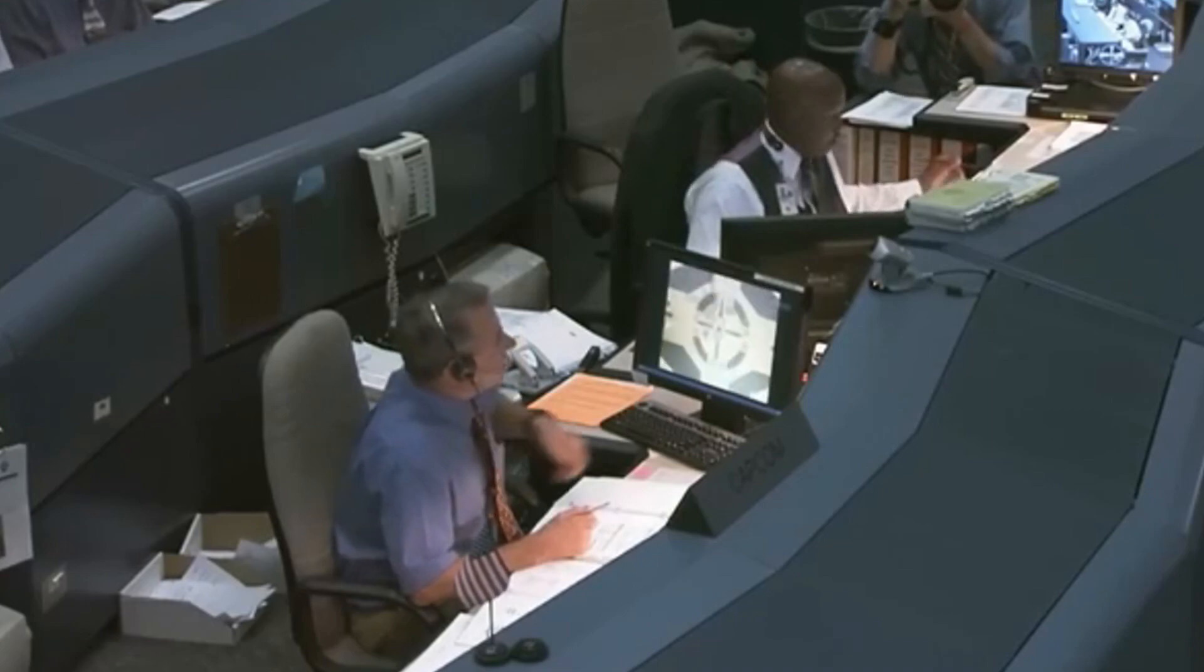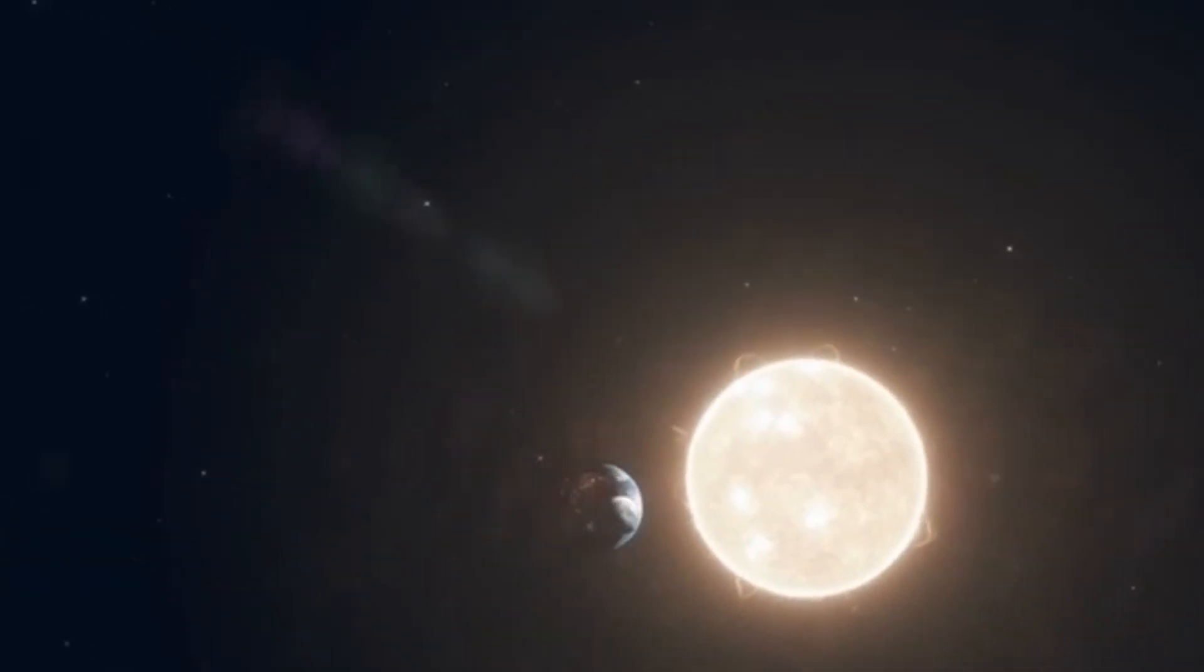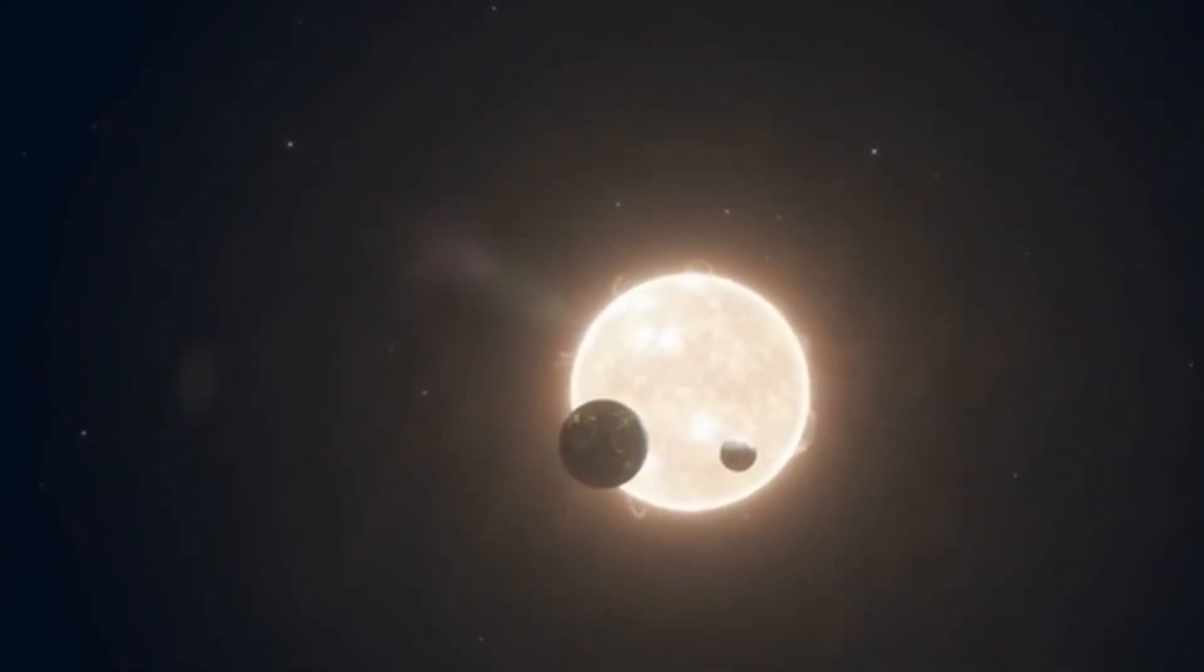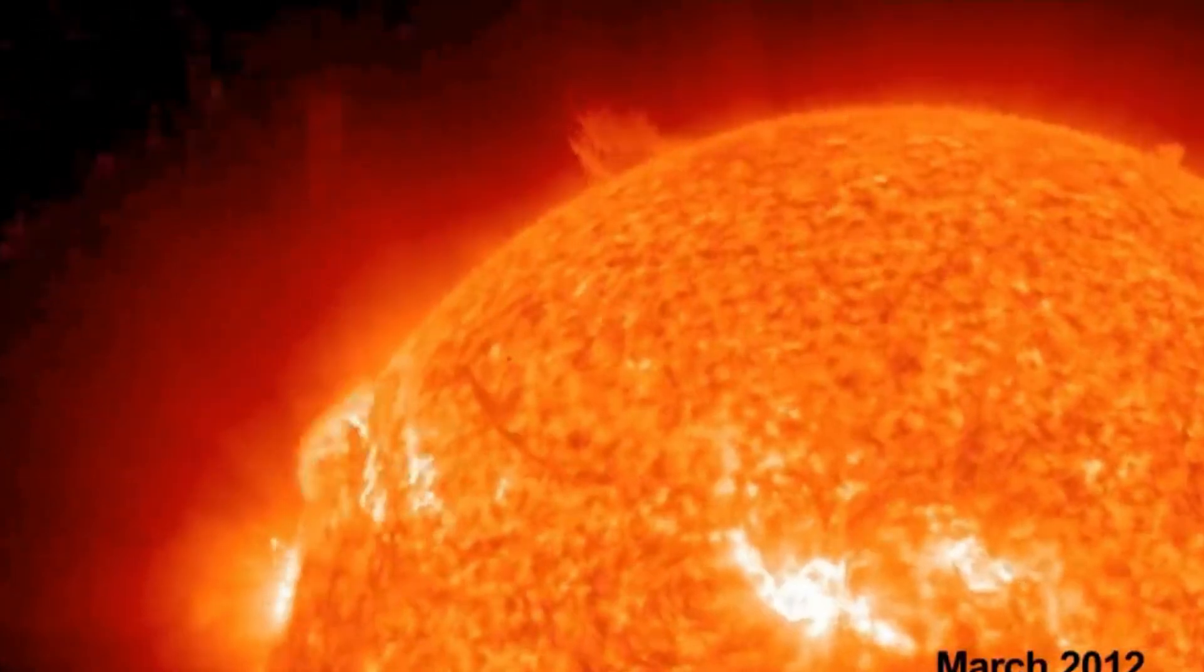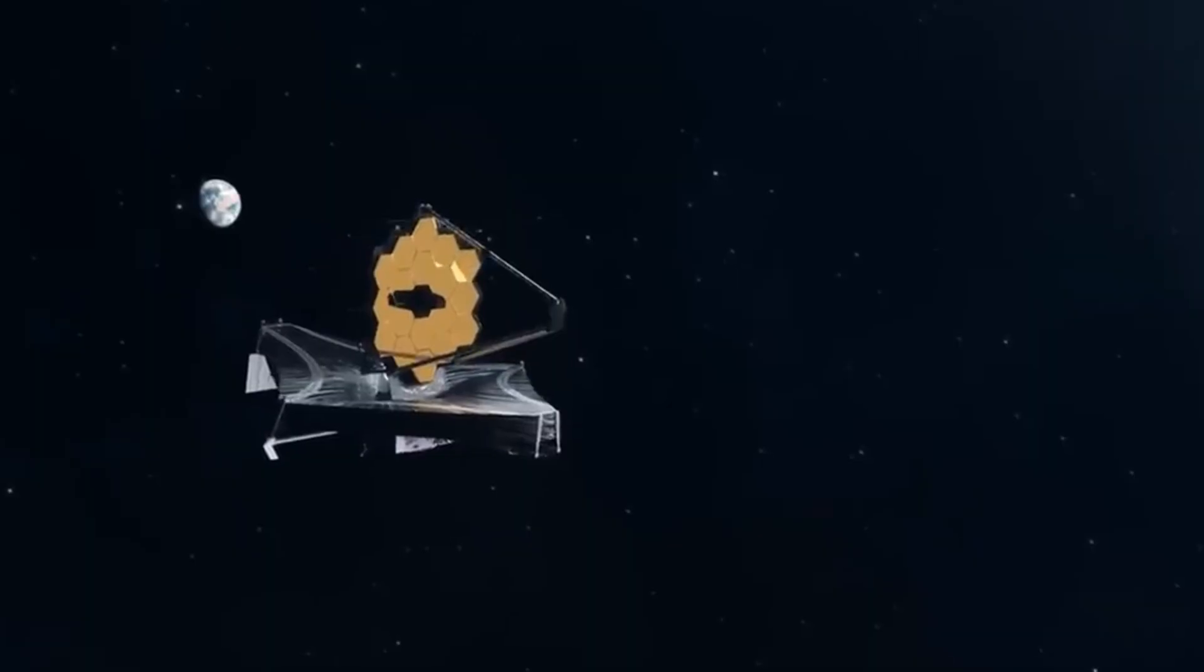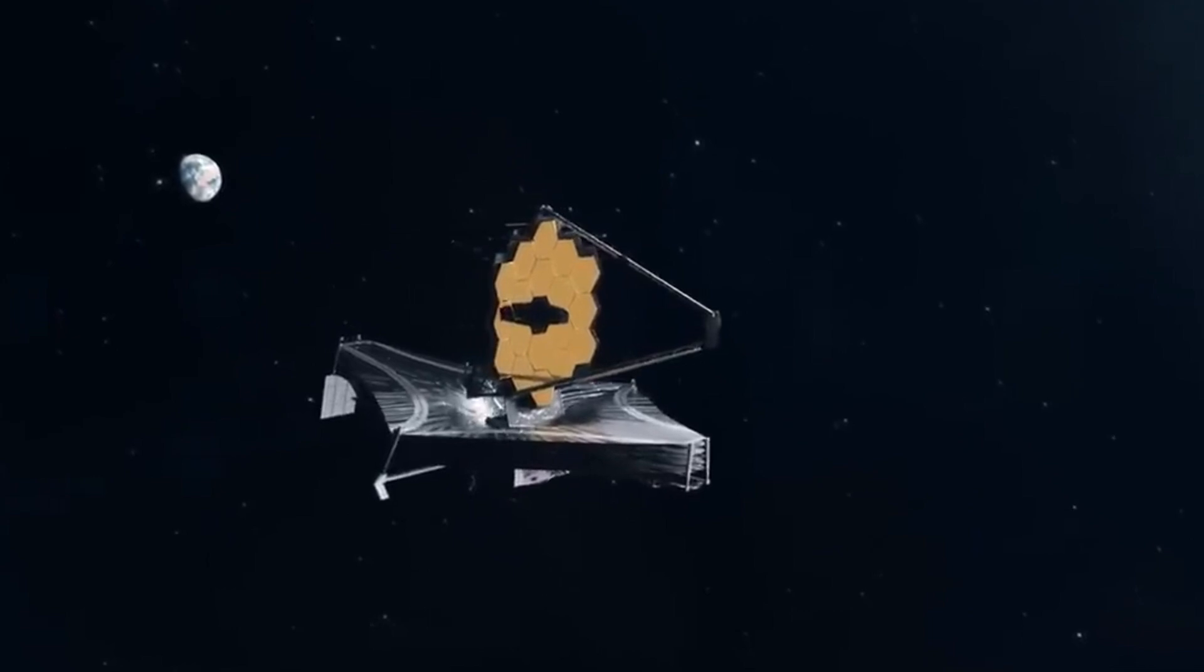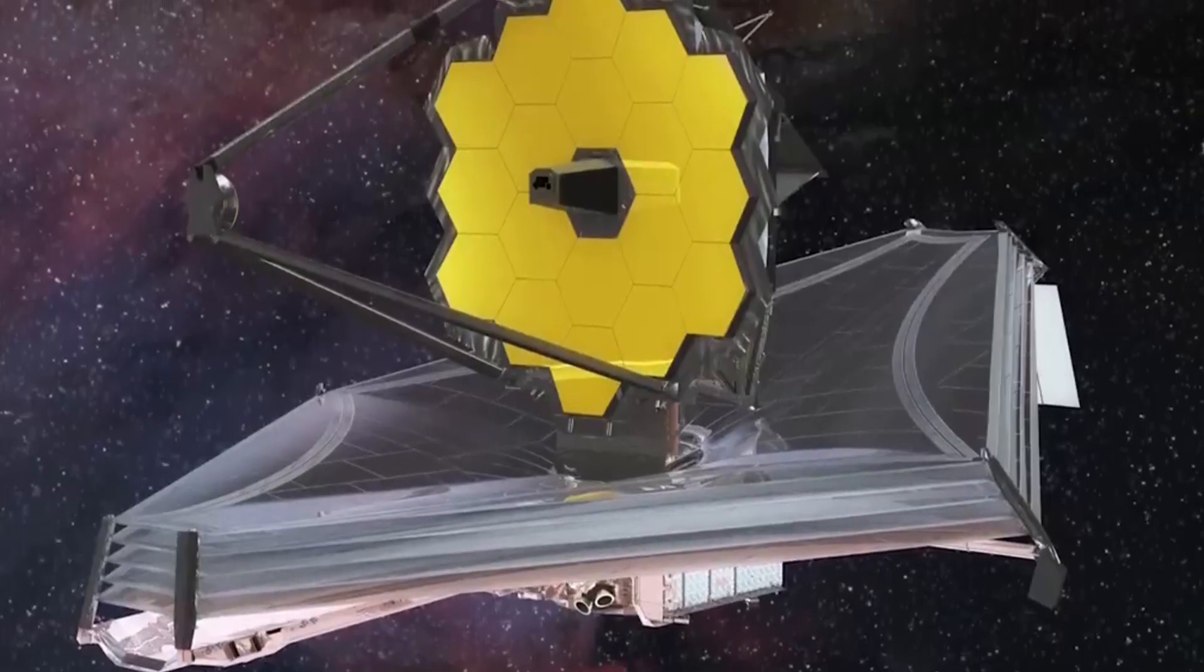Naturally, the need for a successor, the James Webb Space Telescope, stemmed from the desire to overcome these limitations. The JWST was designed with larger and more advanced instruments, specifically optimized for infrared observations, enabling it to peer deeper into space, study the earliest galaxies, and characterize exoplanets in ways the Hubble simply couldn't.